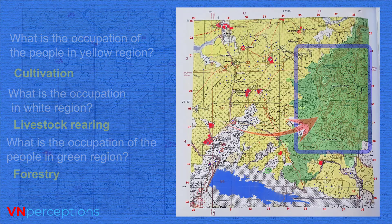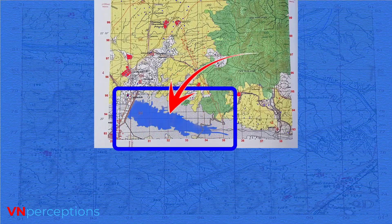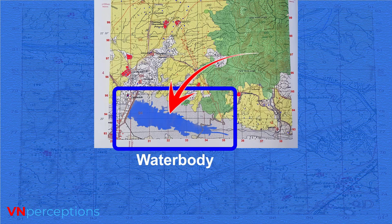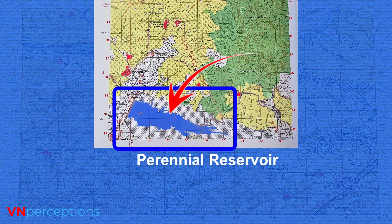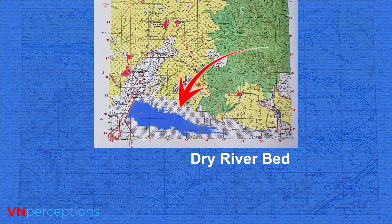The next color we are going to look into is blue. Blue color in the map refers to water bodies. This blue color region is a perennial tank or perennial reservoir. Similarly, you can see a gray color in the background, which refers to a river bed — a dry river bed, because this is a seasonal river.